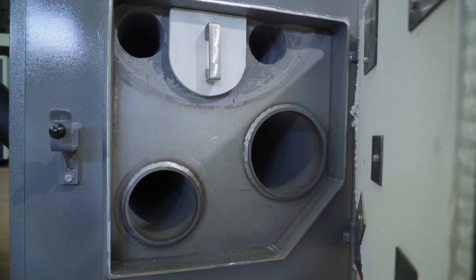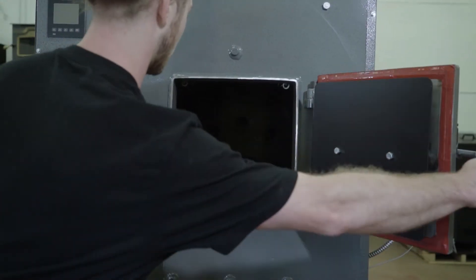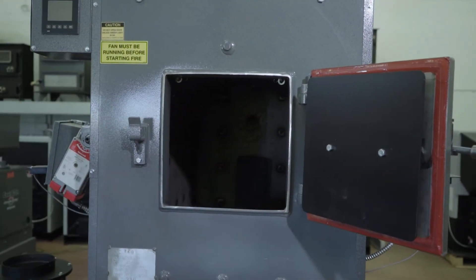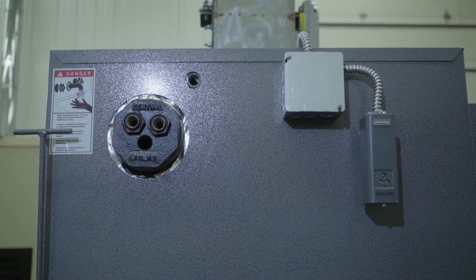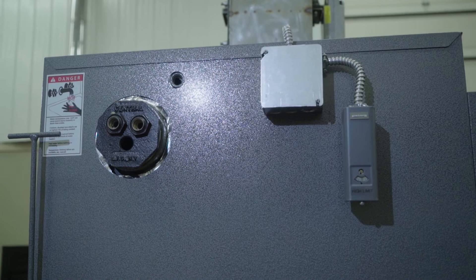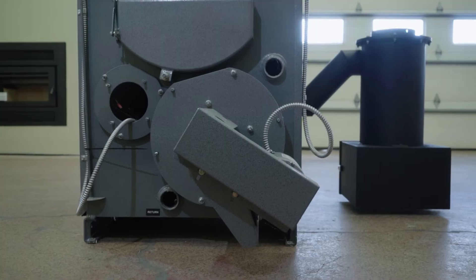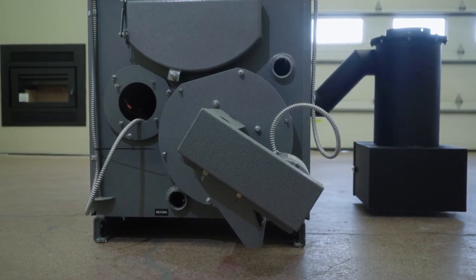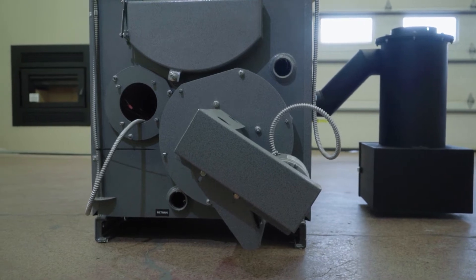Our heat exchanger is extremely efficient and pulls 80 to 85% of the heat out of that flame and puts it into your water, which you can use for whatever application. The E250 produces 250,000 BTUs per hour, which means it will heat up to 9,000 square feet.